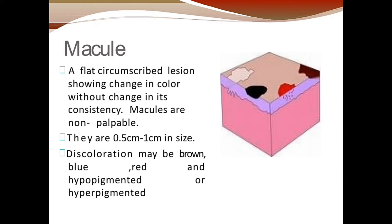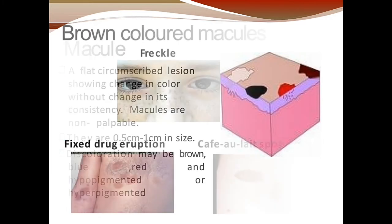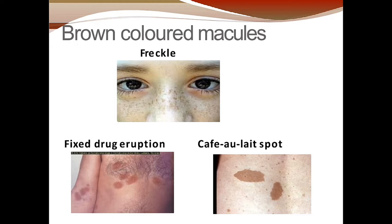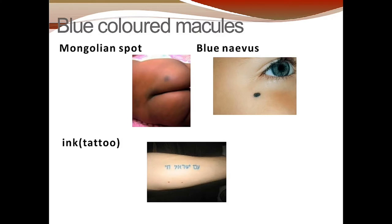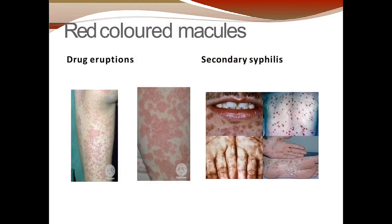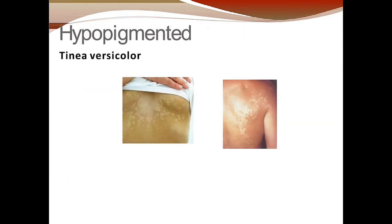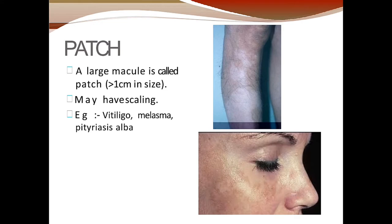The size of a macule is usually 0.5 to 1 centimeter. The discoloration may be brown, blue, red, hypopigmented, or hyperpigmented. Examples of brown color macules include freckles, fixed drug eruptions, and café au lait spots. Blue color macules include mongoloid spots, blue nevus, and ink tattoos — they are just a change in discoloration without elevation. Red color macules can be due to drug eruption or syphilis.